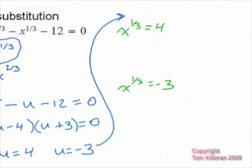Now to get rid of the one-third power, what we're going to do is raise both sides to the third power. So we're going to cube this side and cube this side. And the first equation is going to tell me that x equals 64, so that becomes one of our solutions.